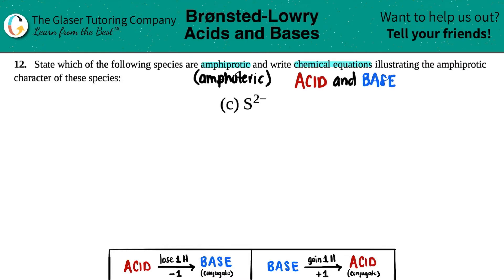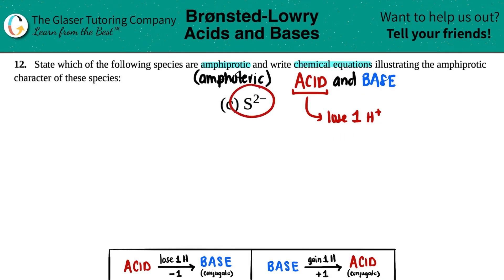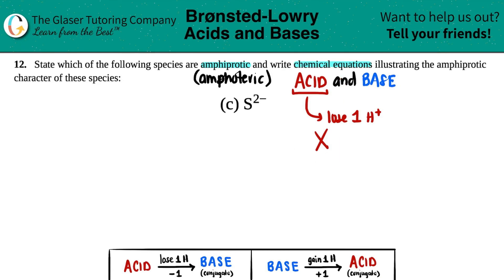The acid behavior is pretty easy to detect, because acids always lose one hydrogen in the form of H⁺. So if you're going to lose a hydrogen, you need a hydrogen to give. But looking at S²⁻, there are no hydrogens here. So can this act as an acid? No. And since it can't act as an acid, it cannot be amphiprotic.